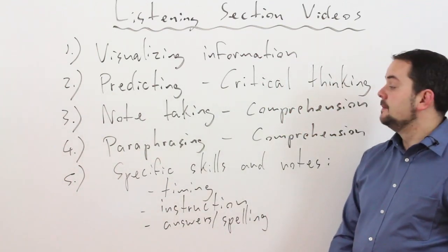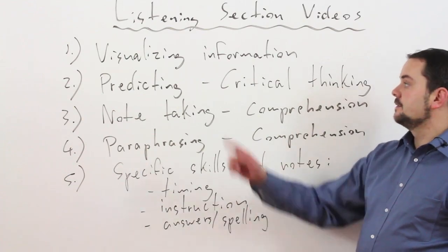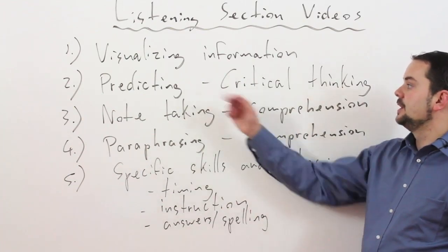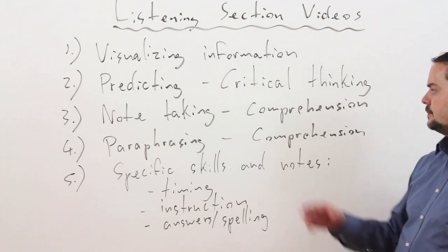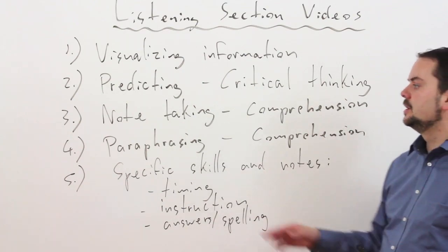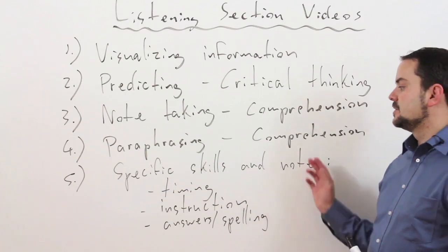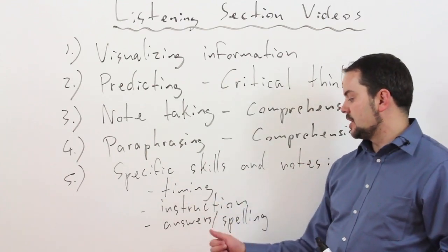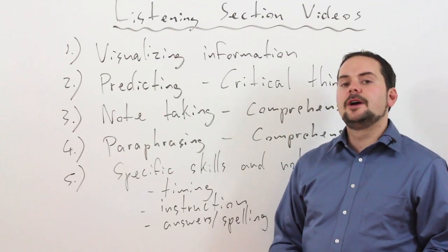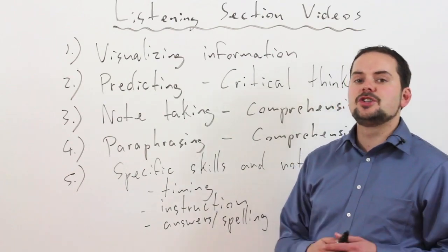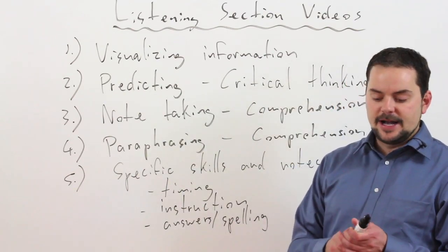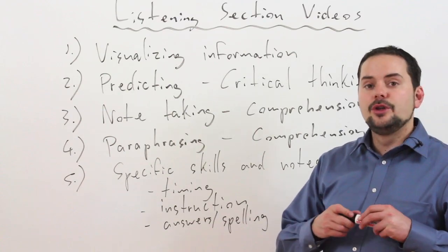So again, these lessons will be broken into these five parts. Visualizing information, predicting critical thinking, note-taking and comprehension, paraphrasing and comprehension. Number five, specific skills and notes, which include timing, instructions, answers, spelling, and then we're going to look at a few different kinds of questions just so you're very clear on how you should be answering those.